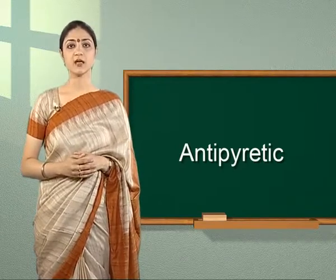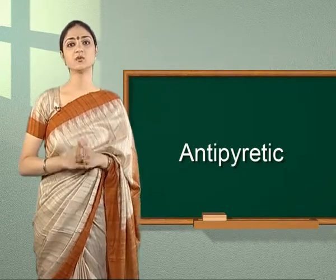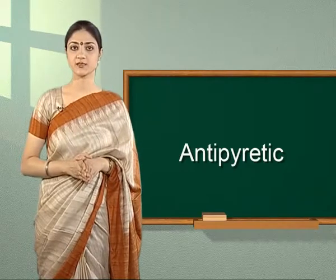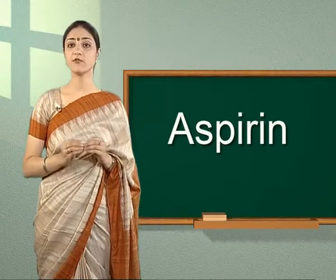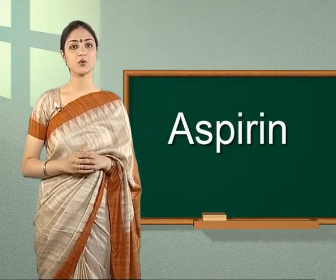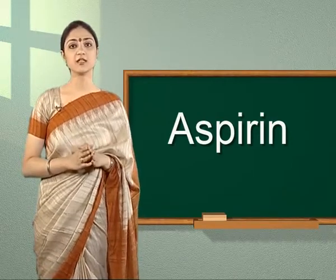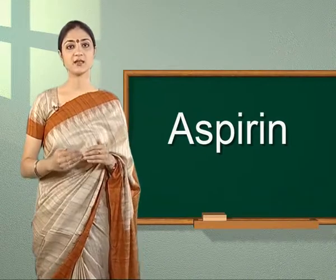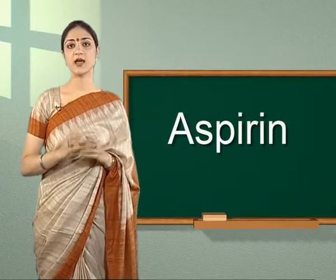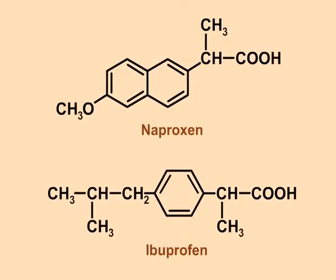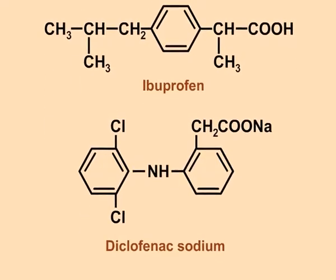Nowadays, because of its anti-blood clotting action, aspirin is widely used to prevent heart attacks. Despite its popularity, aspirin also has harmful side effects. Aspirin is supposed to be toxic to the liver. It sometimes causes bleeding from the stomach wall and is thus a gastric irritant. Because of these defects, other analgesics like naproxen, ibuprofen, diclofenac sodium or potassium are currently being used.